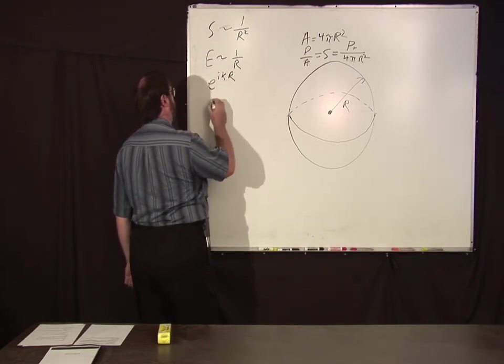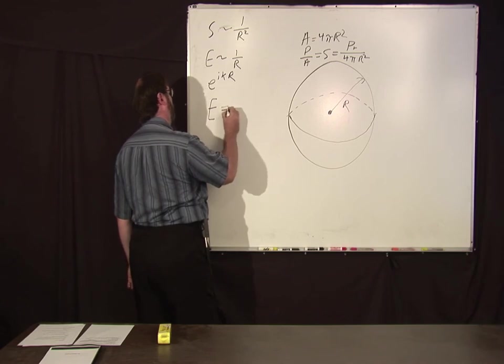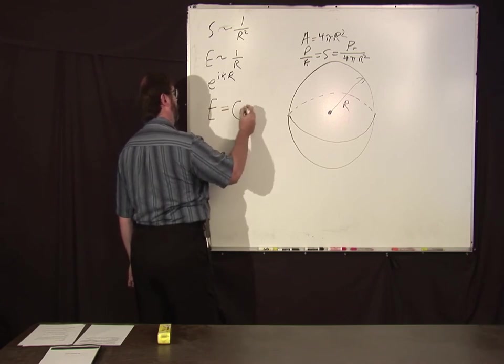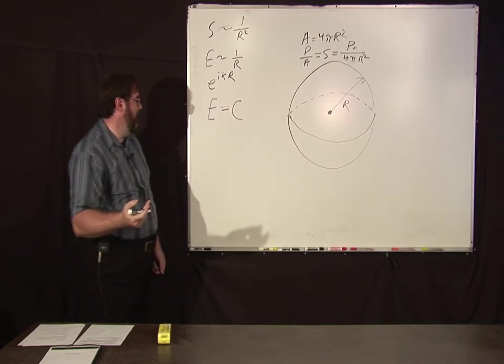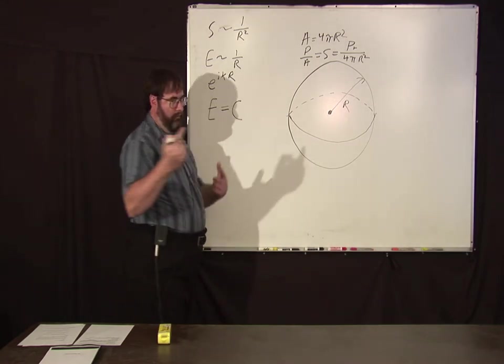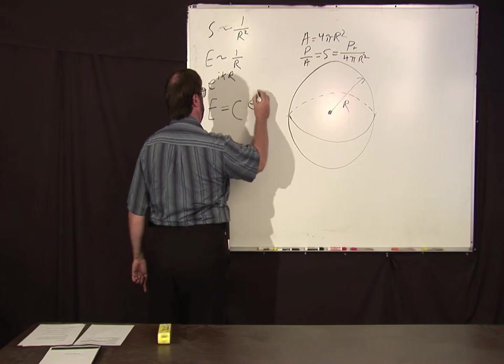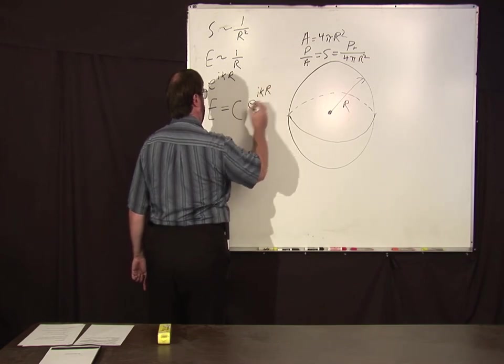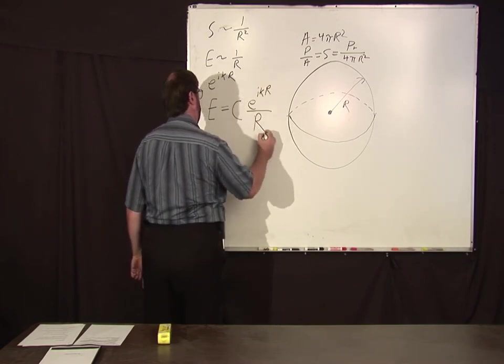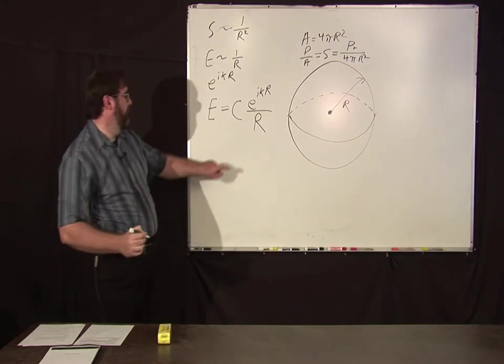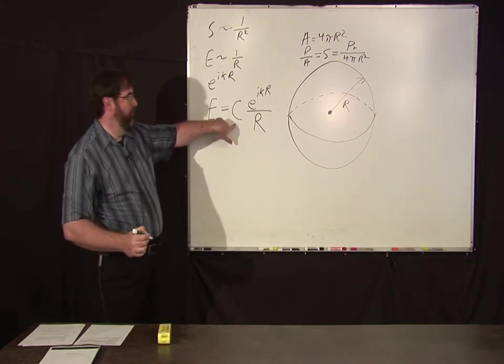So the most general form is some complex for the field for an isotropic radiator, scalar, is some e to the ikr over r. Now this is a complex constant of some sort.